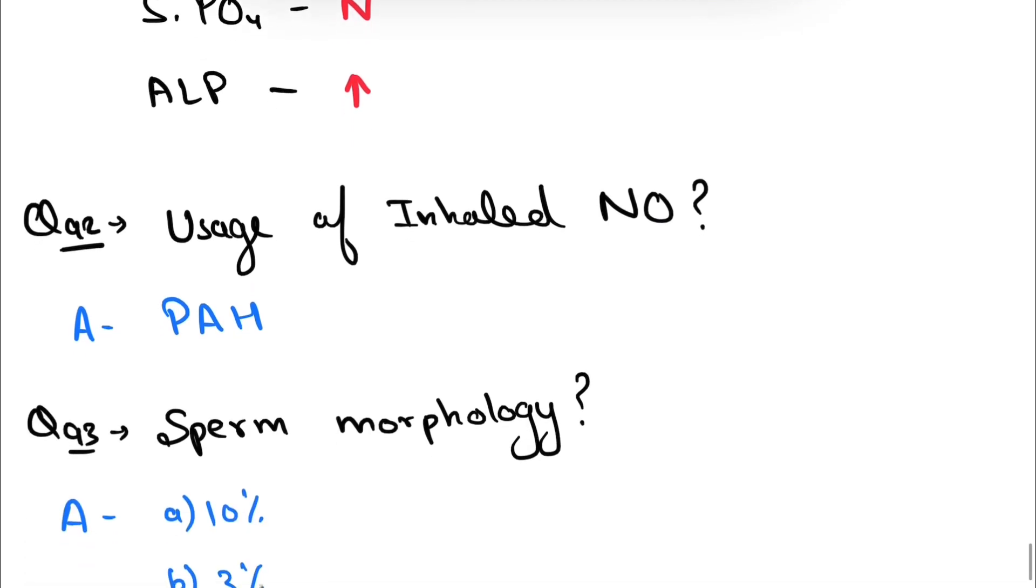Question number 92: usage of inhalational nitric oxide. This is pulmonary artery hypertension.